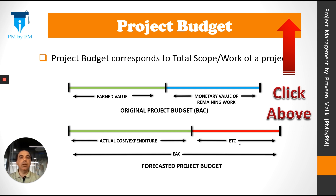Now, on the control date, our original budget may not be sufficient to complete the project work, so we will need to revise the project budget. Instead of BAC, we might need more funds to complete the project work. We can forecast a new budget, which is called EAC, or estimate at completion.